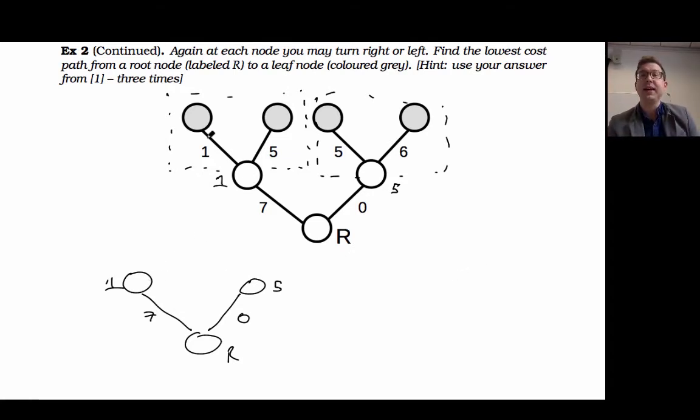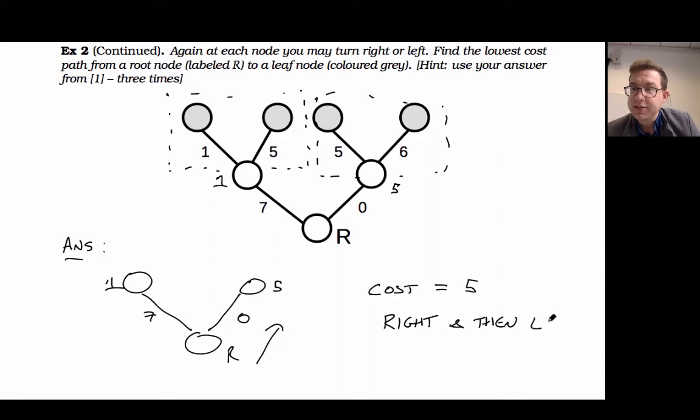So I know if I get to this node, the best decision is to get a cost of one. And if I get over here, the best thing is to go left and get a cost of five. So now I'm here. What should I do? Should I go left and get seven plus one or should I go right and get zero plus five? Right. So the answer here is cost is five. And you notice that we go right and then from this bit we go left. So right and then left.